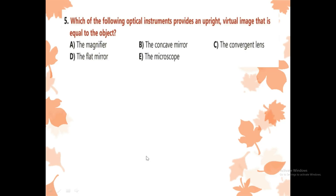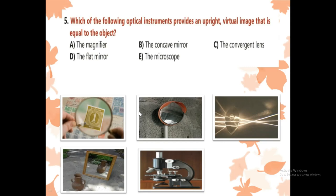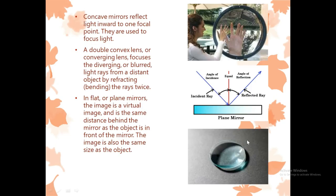Which of the following optical instruments provides an upright virtual image that is equal to the object? I will show these optical objects: microscope, mirror, magnifier, concave mirror, and converging lens. A concave mirror reflects light inward to one focal point and is used to focus light — the image is larger than the object. A double convex or converging lens focuses diverging light rays from a distant object, bending the rays twice, and magnifies or doubles the object.